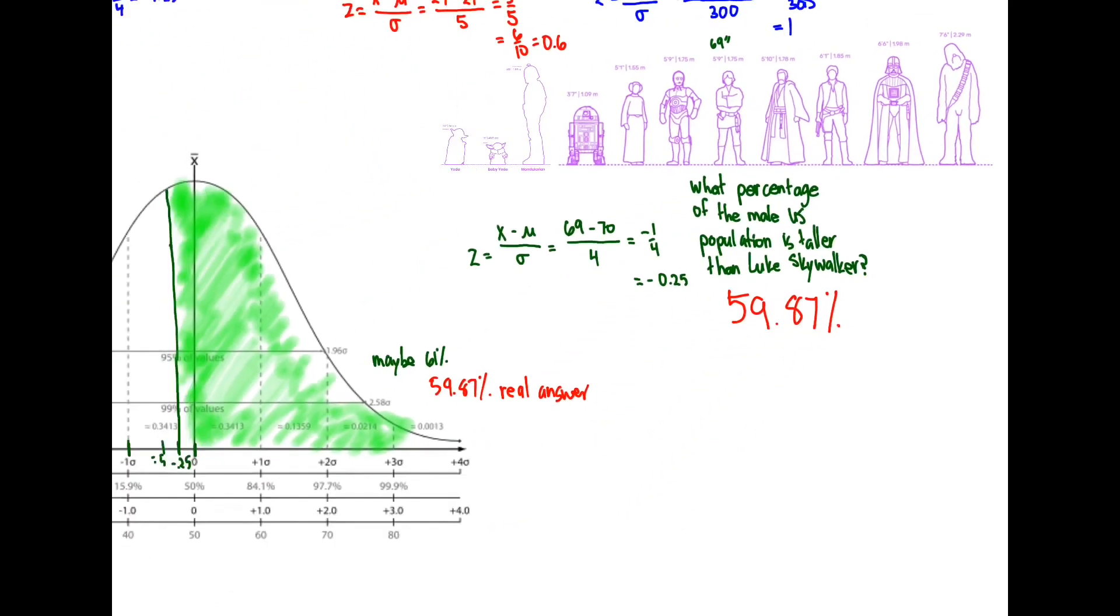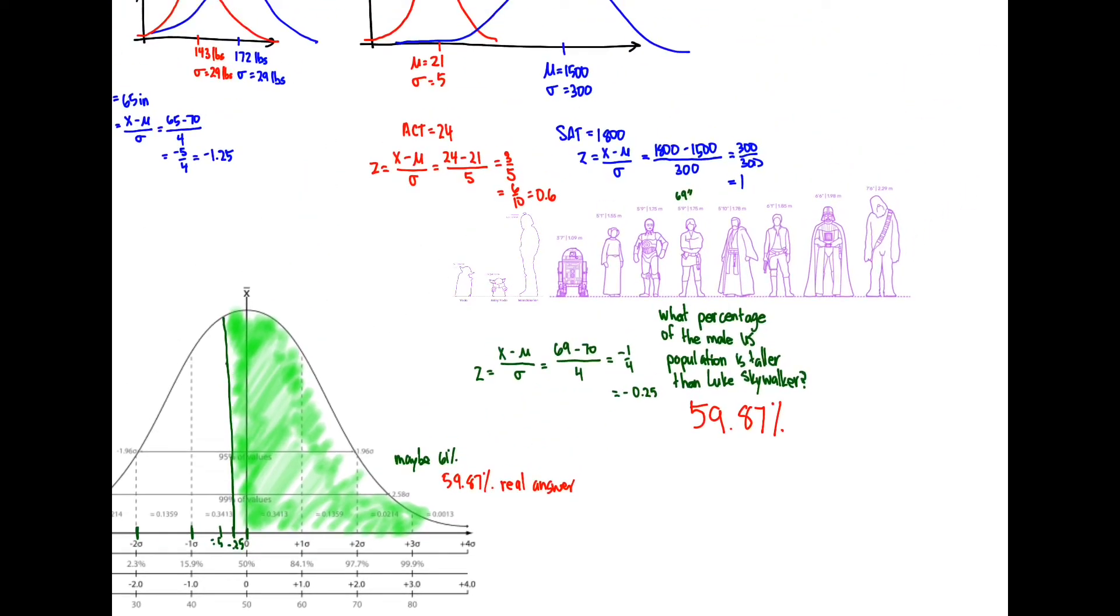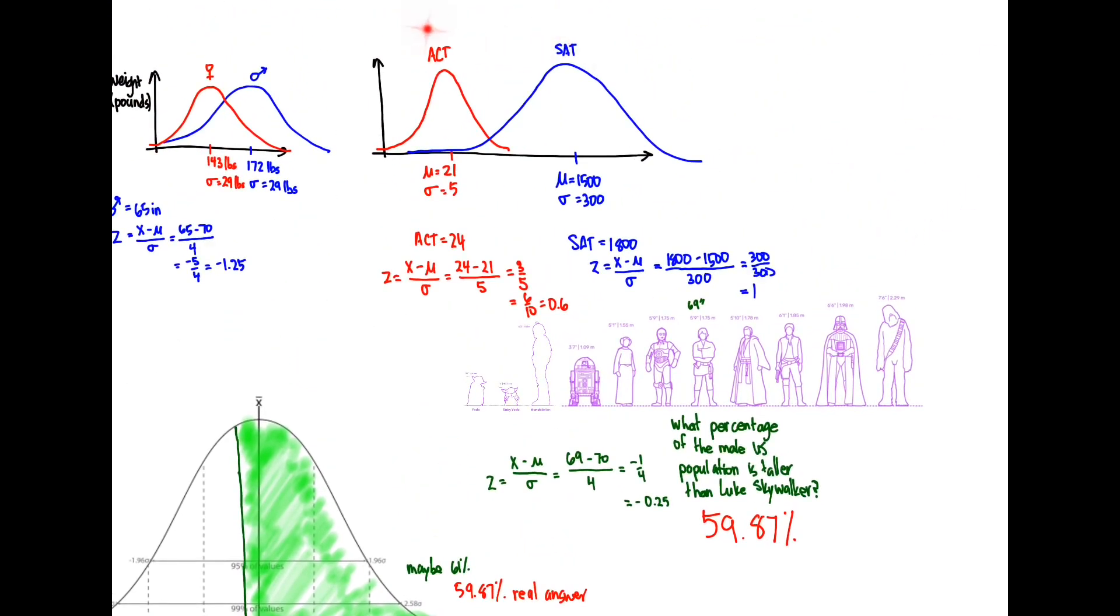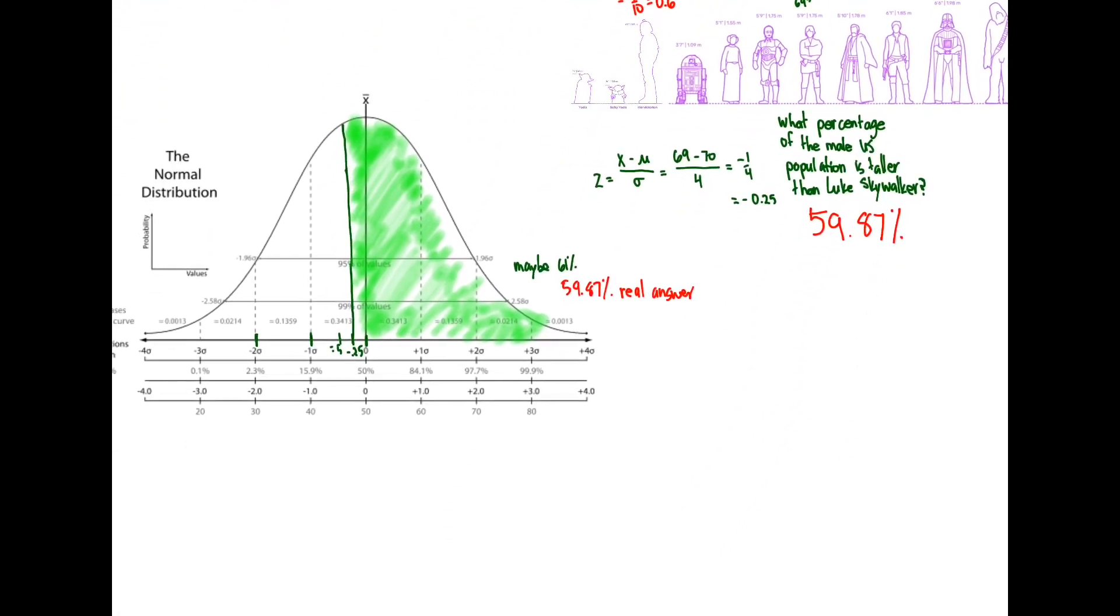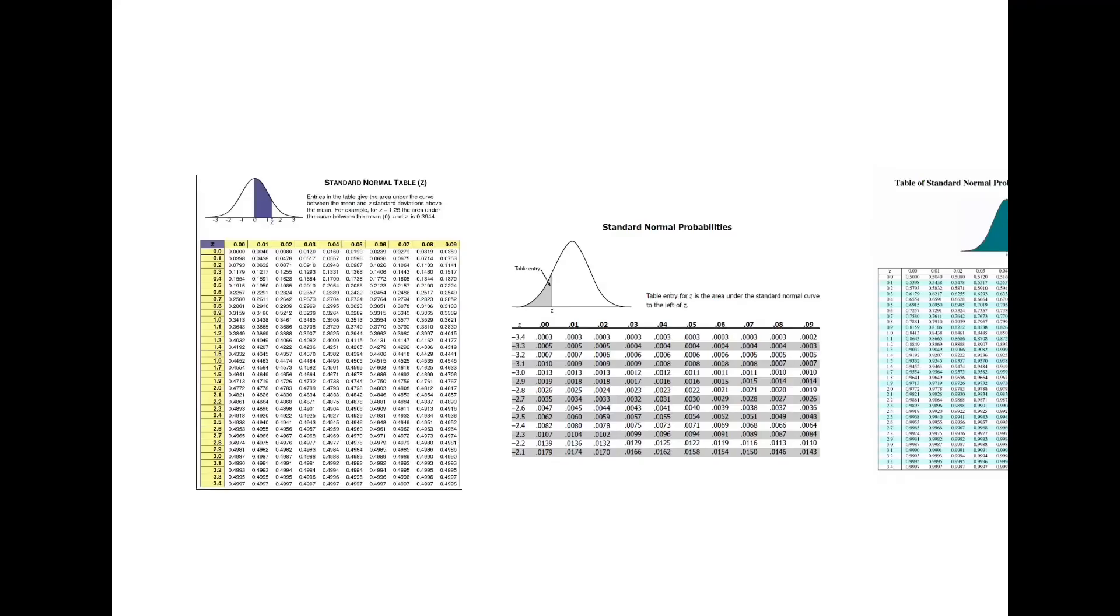And so that's kind of what the Z scores let you do. Let's just compare two different normal distributions like we here with the ACT and the SAT. And it can also let us calculate probabilities. And in this case, we calculated the probability that a given person in the US population is going to be taller than Luke Skywalker. We calculated the Z score in order to do that.